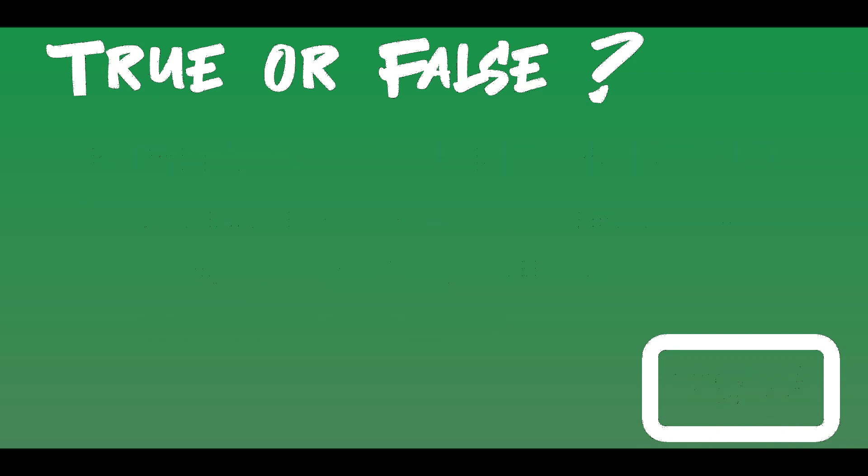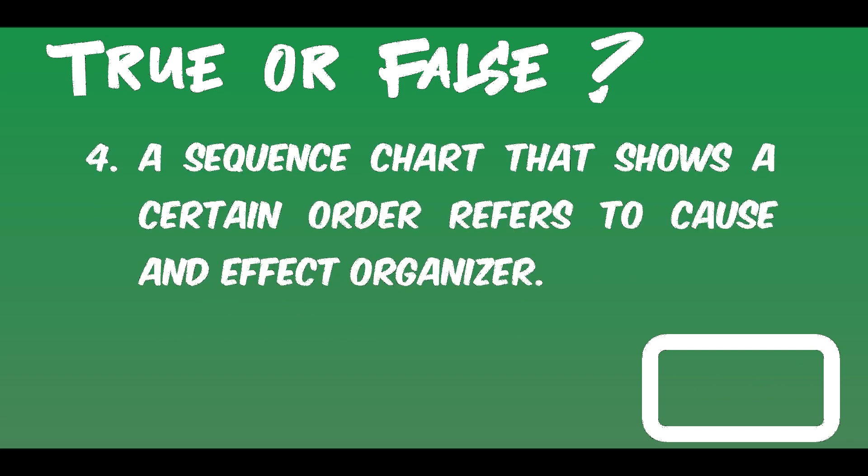Number 4. A sequence chart that shows a certain order refers to cause and effect organizer. What do you think is the answer? The answer is false.